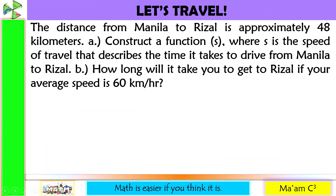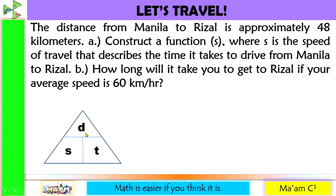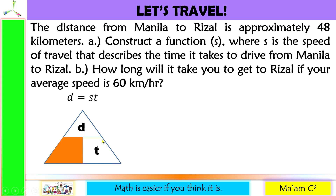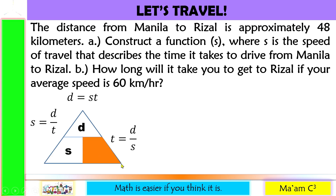Let us travel. The distance from Manila to Rizal is approximately 48 kilometers. Letter A: construct a function S where S is the speed of travel that describes the time it takes to drive from Manila to Rizal. Let me introduce the magic triangle: D for distance, S for speed, and T for time. D equals S times T; S equals D divided by T; and T equals D over S. So for letter A, S of T is equal to D over T.